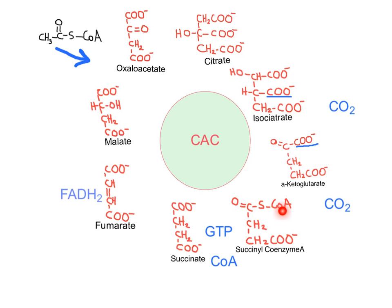When succinyl coenzyme A gets hydrolyzed, it releases coenzyme A and a molecule of GTP, producing succinate. This four-carbon molecule is on the way to reforming oxaloacetate. The next step is the oxidation of succinate to form fumarate by removing two hydrogens, extracting electrons in the molecule of FADH2. Then, addition of a water molecule produces malate, which can further get oxidized to form oxaloacetate.